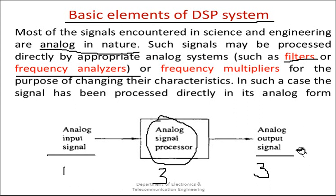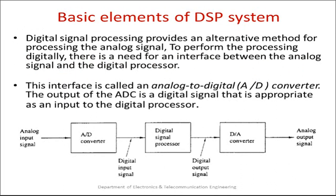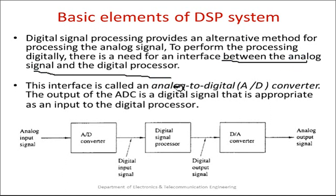In order to form a digitized value, we need to understand the basic elements of the DSP system. Digital signal processing provides an alternative method for processing analog signals. To perform the processing digitally, there is a need for an interface between the analog signal and the digital processor.